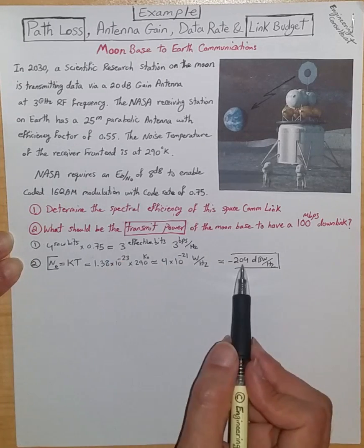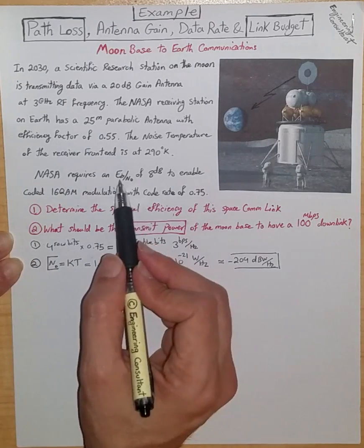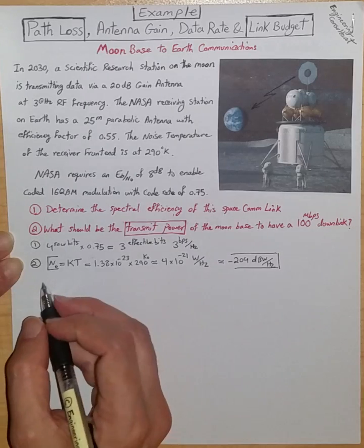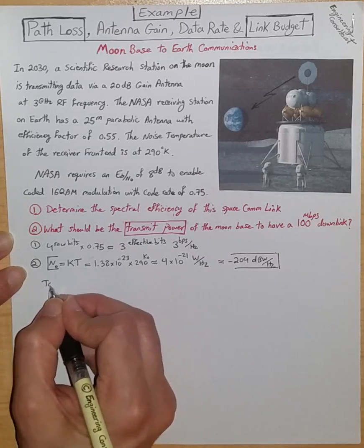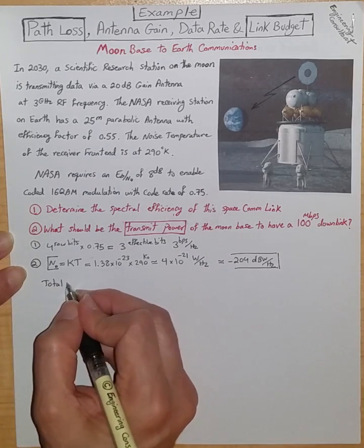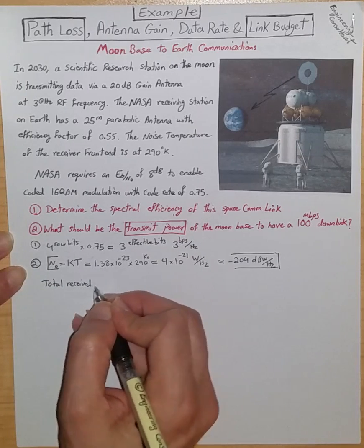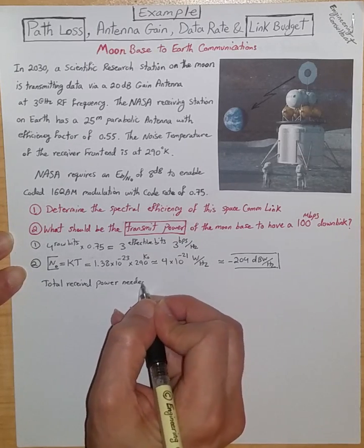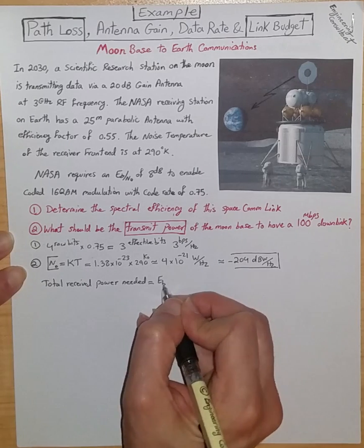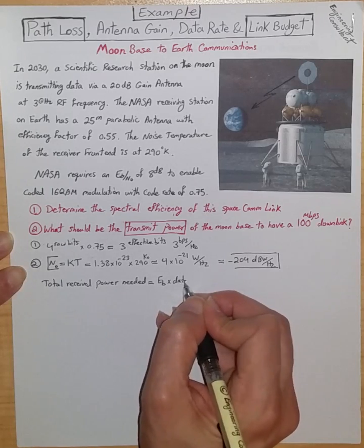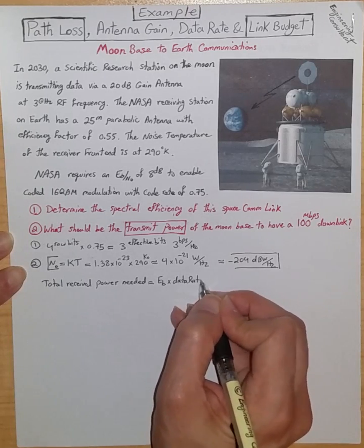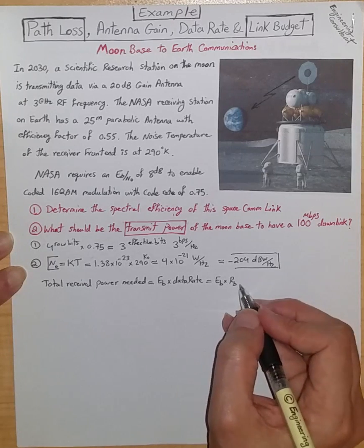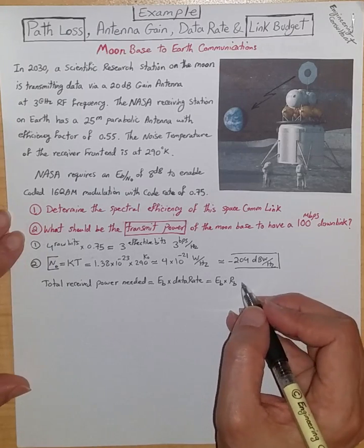From there, if I have N0, which I just calculated, then I can see what is the minimum required energy per bit, which is Eb. Then from there I can proceed with finding total received power requirement. So I need to find Eb.